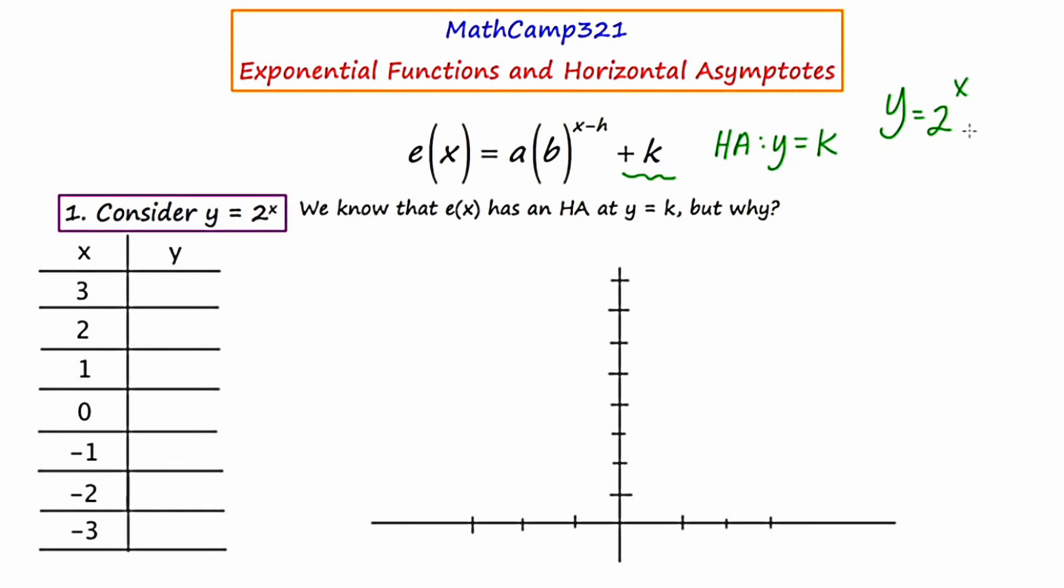that would imply y equals two to the x plus zero, which would mean that there's going to be a horizontal asymptote for this particular graph at y equals zero.